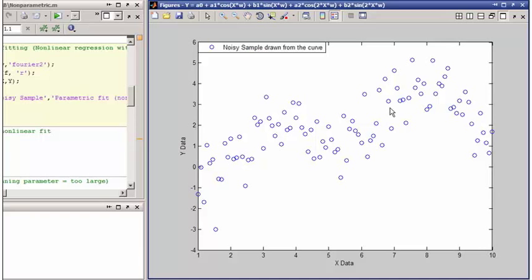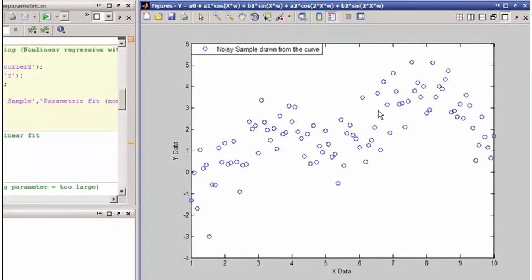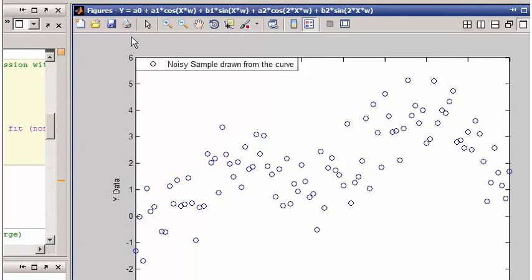In this contrived example, the blue curve was generated using a second order Fourier series. The title bar of the figure contains the equation.